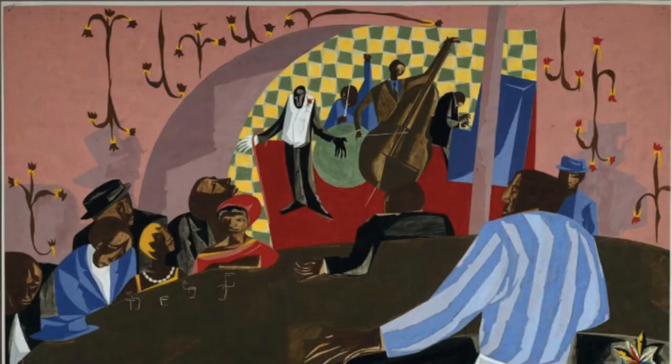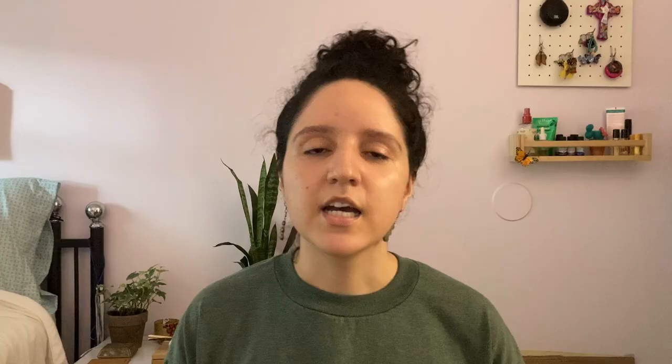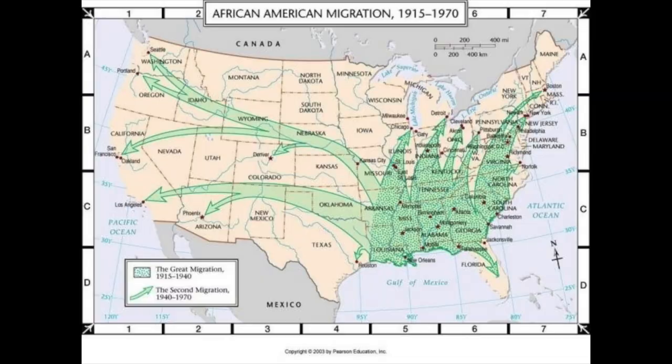Jacob Lawrence is an artist that was making work towards the end of the Harlem Renaissance and onwards. The Harlem Renaissance is a period of time from around the 1910s to the 1930s, where there was a lot of art and music — a vibrant time of cultural production in Harlem, New York City. This revival was influenced largely by the influx of Black migrants from the South during the Great Migration, which also began in the 1910s.